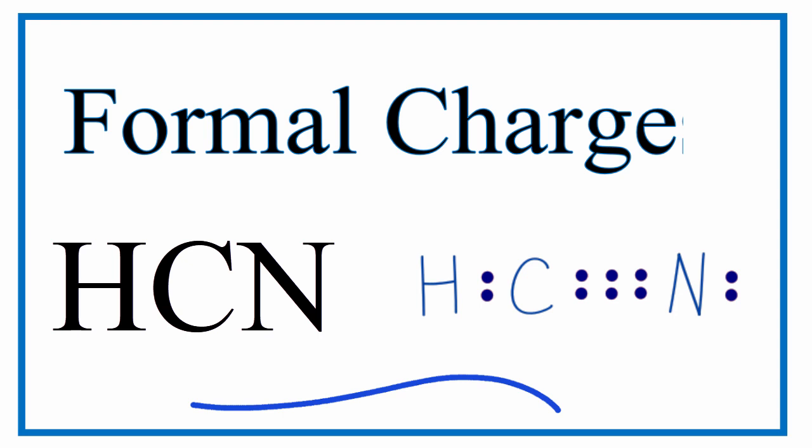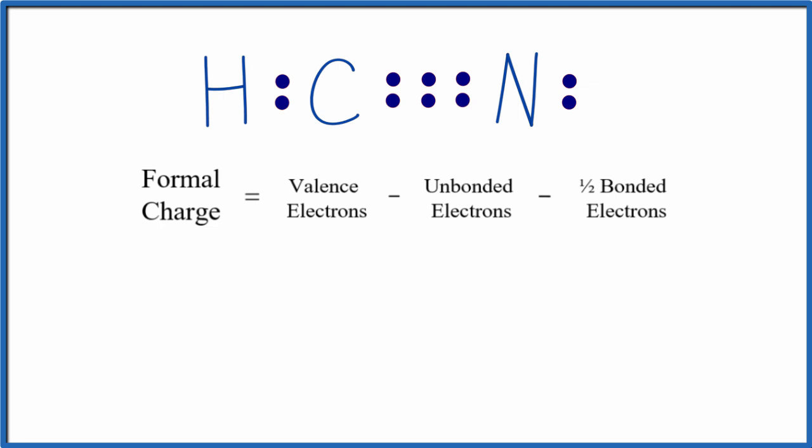To calculate the formal charges for each atom in HCN, we'll first start with the correct Lewis structure. Here's our Lewis structure and the dots - those are the electrons.